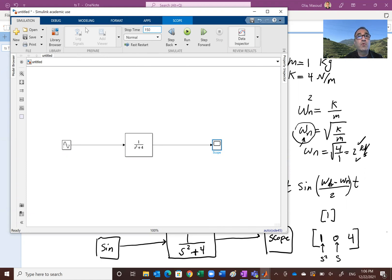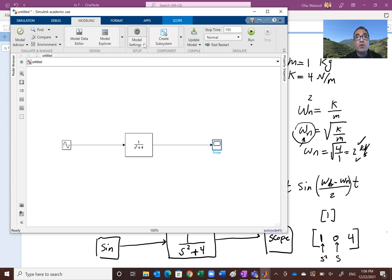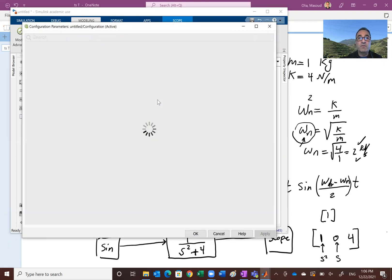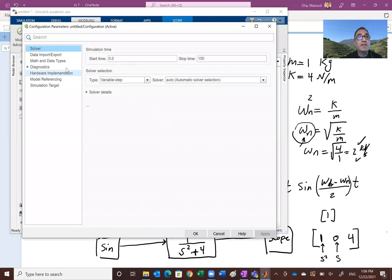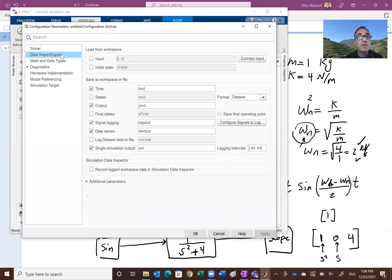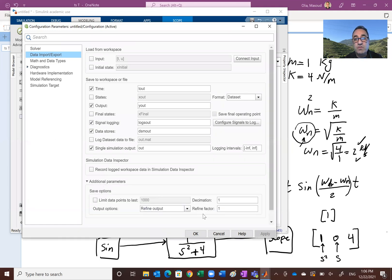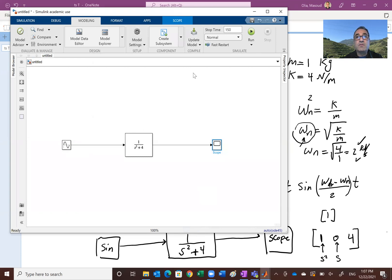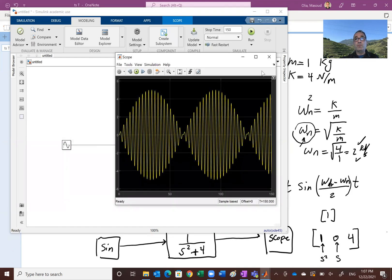And then one other thing, guys, if you go under modeling model settings. Remember, this is in 2020 version. Model settings here. And remember, you could make your curve smoother by having more data points or more calculation done. Go on the data, import and export additional parameters. And you've seen this in the other video. The refine factor has to be larger, maybe 1000. Apply. And okay, let's run it one more time. And let's look at the scope.